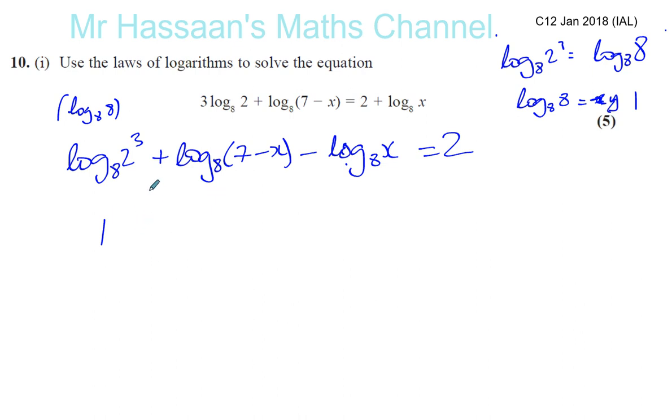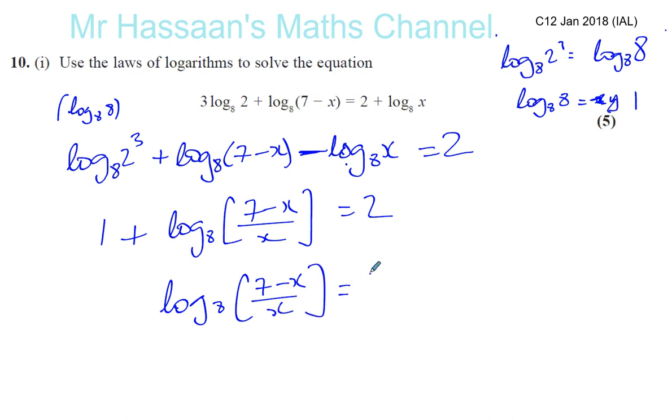Now we've got this situation: 1 plus these two can be combined together because you're subtracting two log terms with the same base, so I can combine them with division. I can say this is log base 8 of (7-x)/x equals 2. All I need to do is subtract 1 from both sides to get rid of this 1, so I have log base 8 of (7-x)/x is equal to 1.